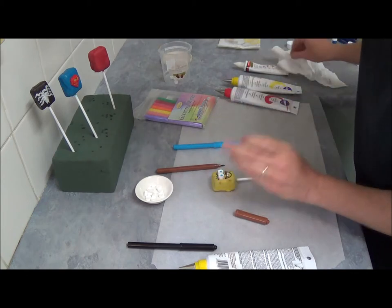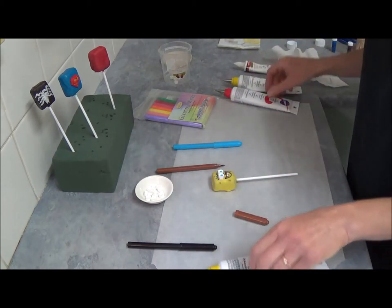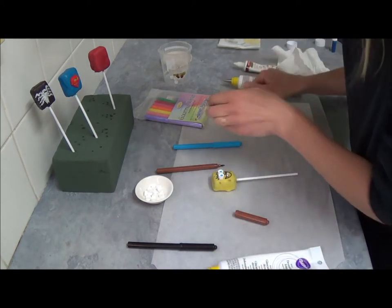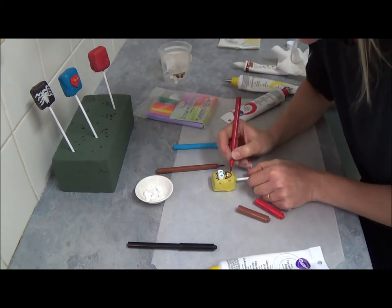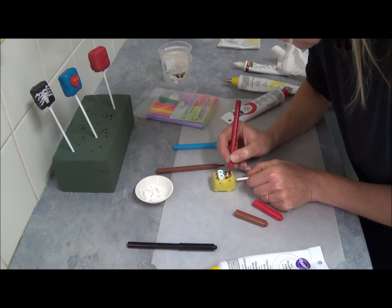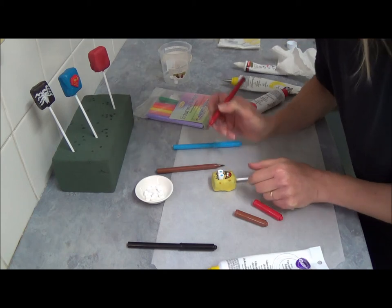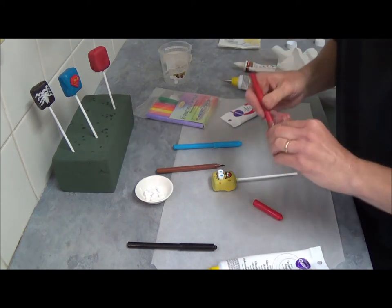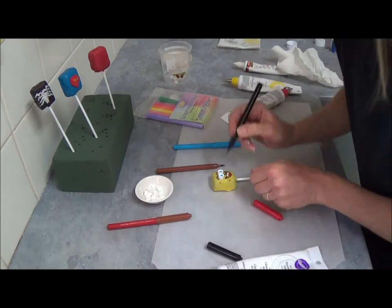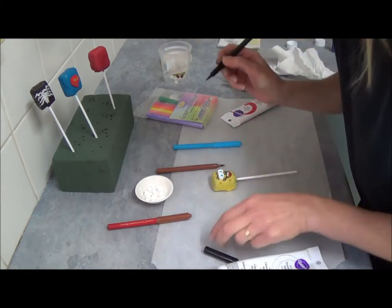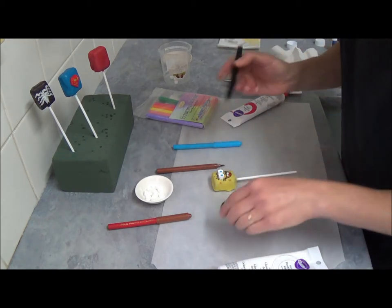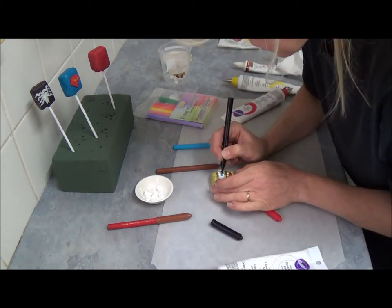We just need to wait a few minutes. Once the teeth are done, let them set a little bit, and we can draw a tongue as well. We need to put some pupils with black.